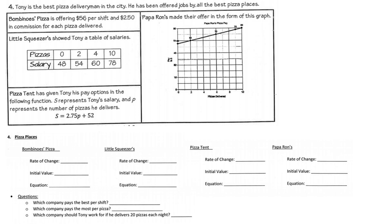Problem four: Tony is the best pizza delivery man in the city and has been offered jobs by multiple pizza places. Bambino's Pizza is offering $56 a shift and $2.50 in commission for each pizza delivered. His rate of change is $2.50 per pizza, and his initial value is $56 for coming to work. We write the equation: y equals 2.50x plus 56.